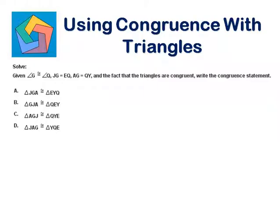Solve. Given angle G is congruent to angle Q, JG is equal to EQ, AG is equal to QY, and the fact that the triangles are congruent, write the congruence statement.